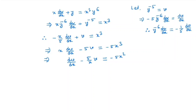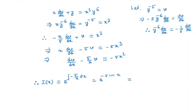Now we have a first order linear equation. So the integrating factor I(x) will be e to the power of the integral of the coefficient of v, which is minus 5 over x, dx. So we get e to the power of minus 5 ln x, which equals x to the power minus 5.